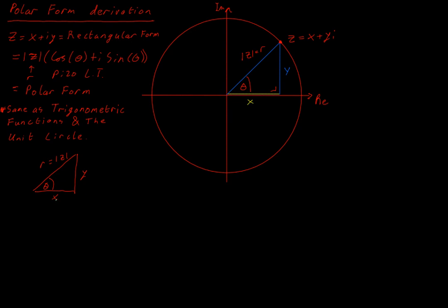How am I going to relate my X and my Y from my rectangular form to this angle? Well, I know that in my right-angled triangle, I can use sine, cos, and tan. So cos of this angle would be the adjacent over the hypotenuse. So if I write that down in general, cos of an angle would be the adjacent over the hypotenuse.